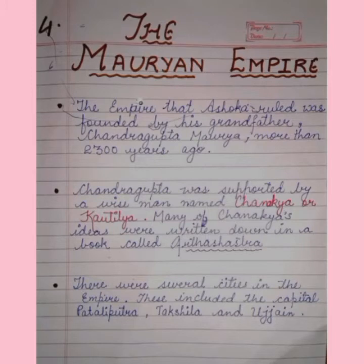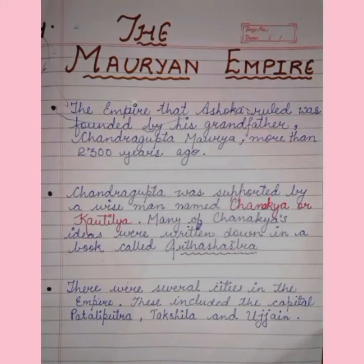Chandragupta Maurya was the first emperor who started the Maurya dynasty. Looking at the map, there were several important cities in the empire, including the capital Pataliputra, Taxila, and Ujjain.